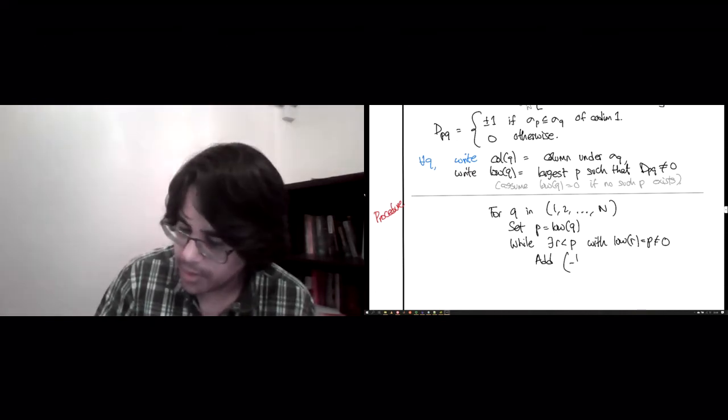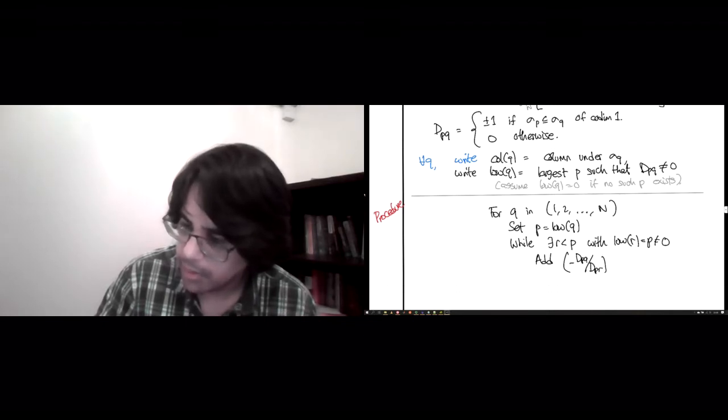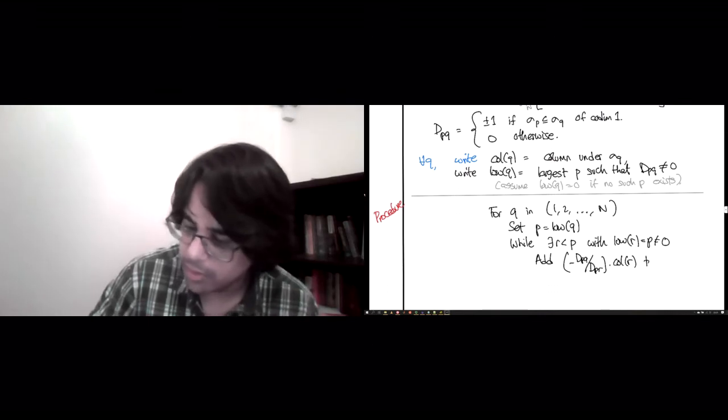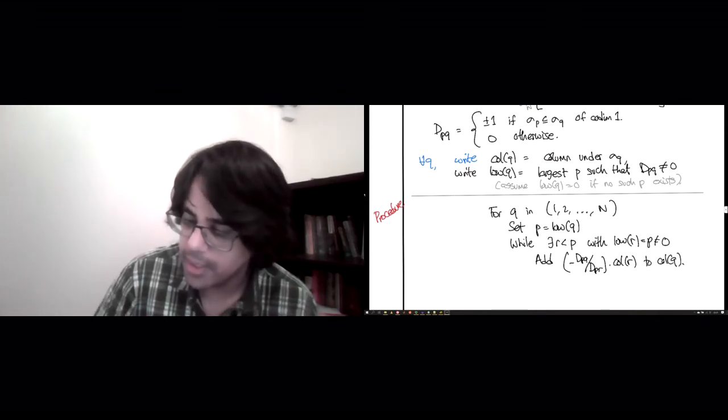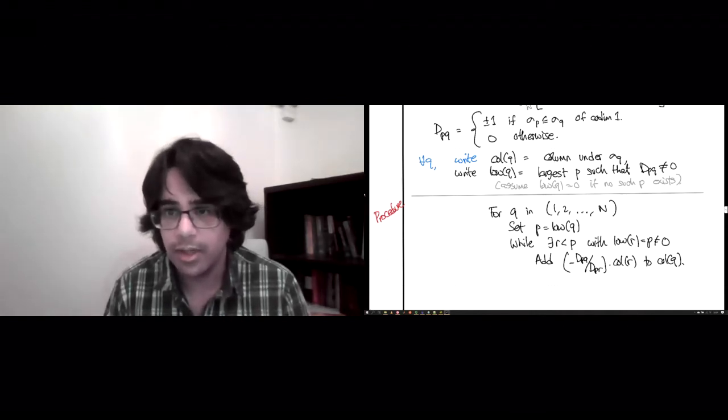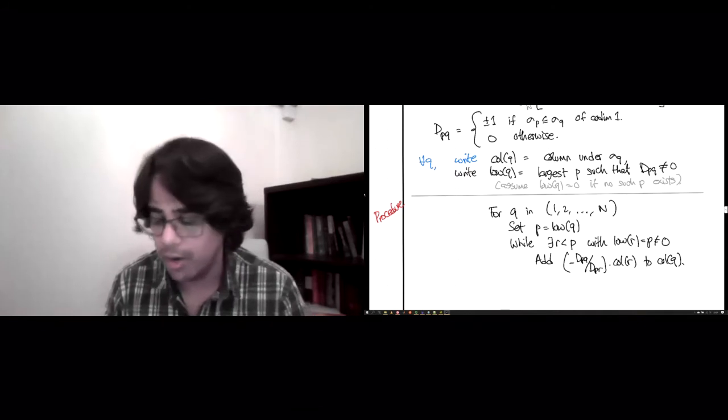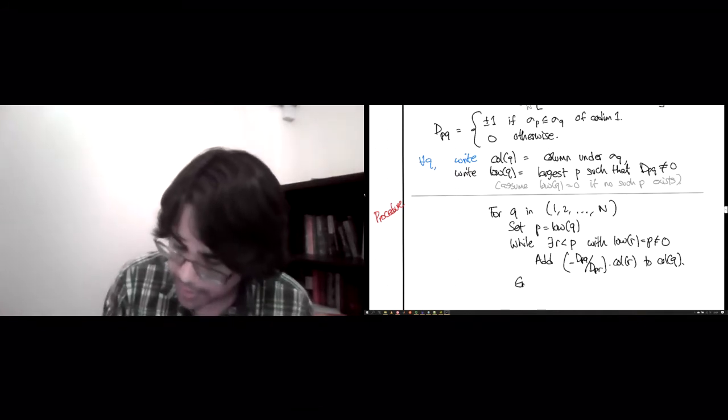multiplied by column R. So that scalar multiple of column R to column Q. And this is guaranteed to reduce the lowest entry to be from row P to something less than P. We don't know how far up we will go. And that's it.